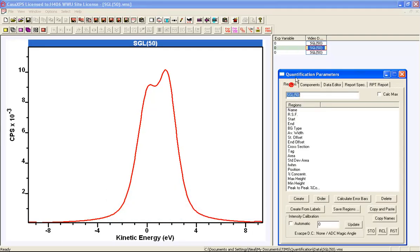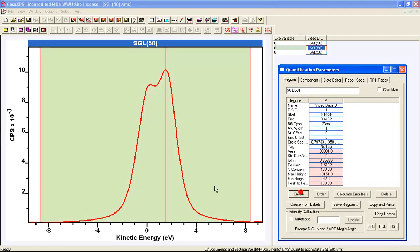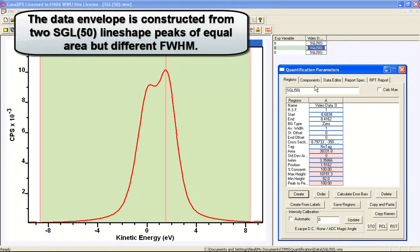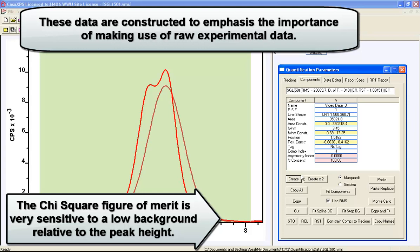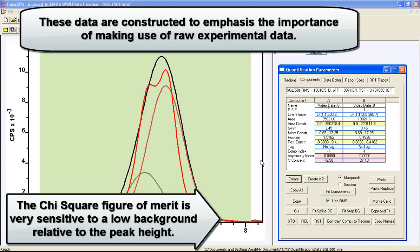Let's construct a peak model quickly on these data. We'll use a zero background - these are synthetic data that have been constructed using two peaks. So I know it is a zero background and then I'm going to add two peaks because I know there are two peaks.